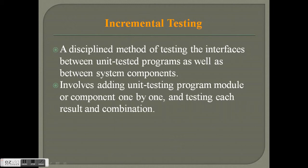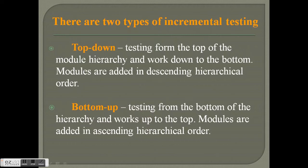Coming to incremental testing: it is a disciplined method of testing interfaces between unit-tested programs as well as between system components. It involves adding unit testing program modules or components one by one and testing each result and combination. There are two types: top-down testing, which starts from the top of the module hierarchy and works down, adding modules in descending hierarchical order; and bottom-up testing, which starts from the bottom and works up, adding modules in ascending hierarchical order.